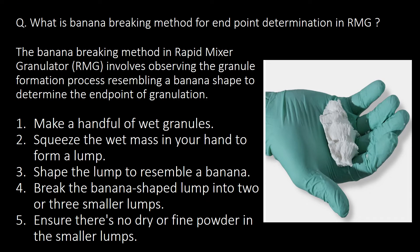What is the banana breaking method for endpoint determination in RMG? The banana breaking method in Rapid Mixer Granulator involves observing the granule formation process resembling a banana shape to determine the end point of granulation. This is done in 5 steps: Step 1 - make a handful of wet granules. Step 2 - squeeze the wet mass in your hand to form a lump. Step 3 - shape the lump to resemble a banana. Step 4 - break the banana-shaped lump into 2 or 3 smaller lumps. Step 5 - ensure there is no dry or fine powder in the smaller lumps.